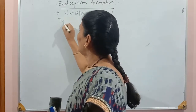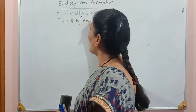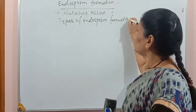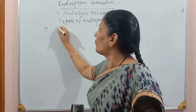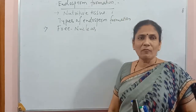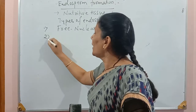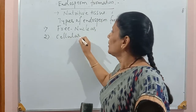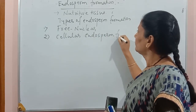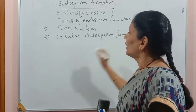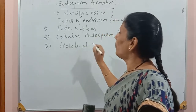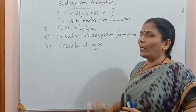There are three types of endosperm formation. First one is free nuclear endosperm formation. Second one is cellular endosperm formation. And third one is helobial endosperm formation. Let us see them one by one.